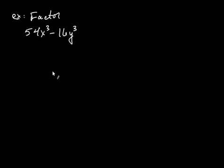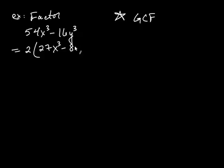Let's factor 54x cubed minus 16y cubed. Now whenever you factor, you always want to always factor out the GCF first if you can. There was no GCF to factor out in the previous problem, but here there is. 54 and 16 have a common factor of 2. So we first write this as 2, and then we're left with 2 times 27x cubed minus 8y cubed.